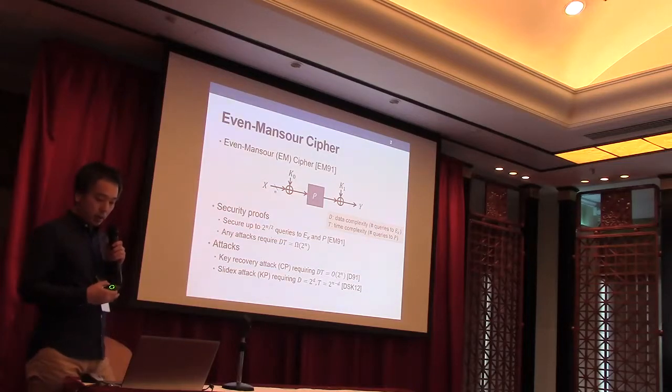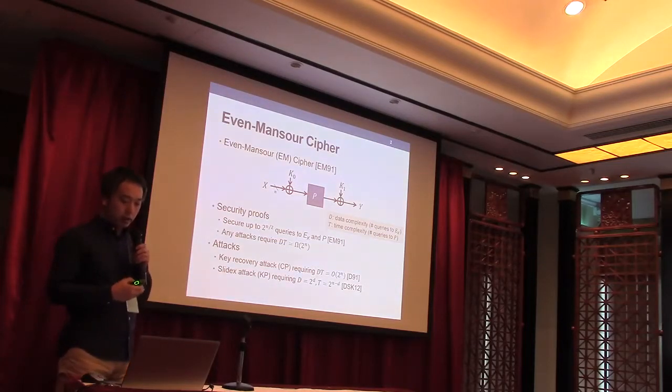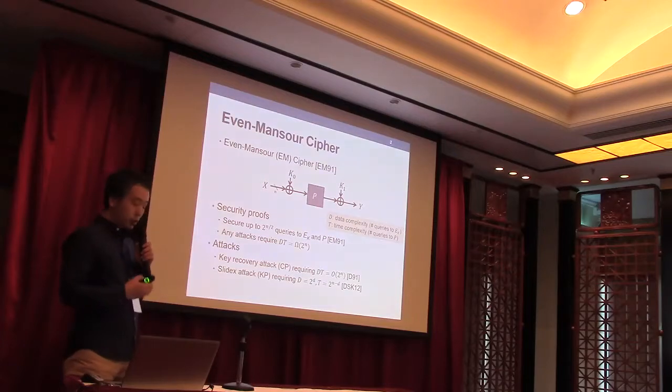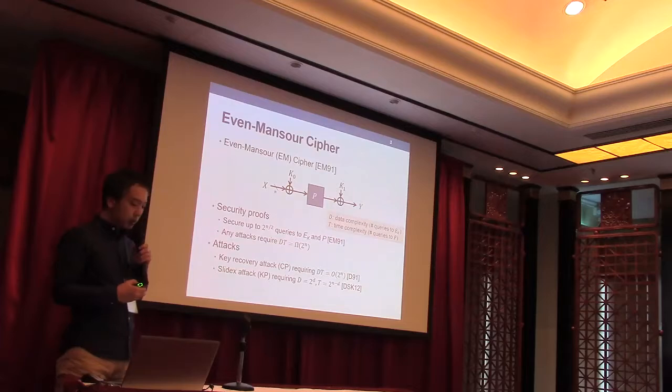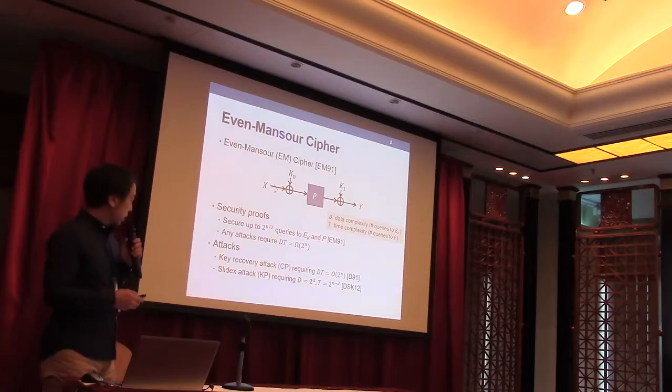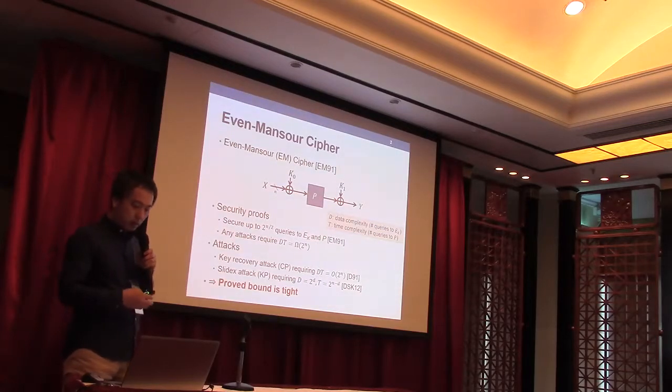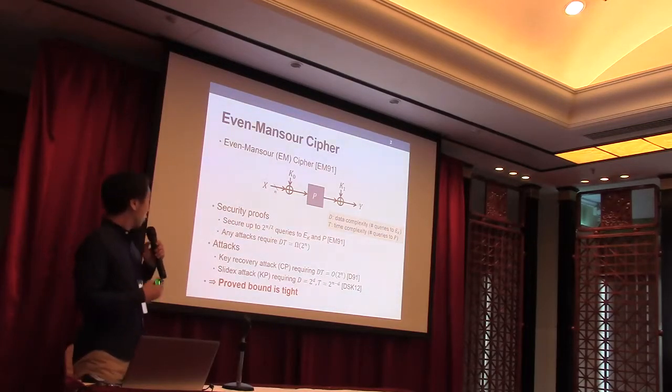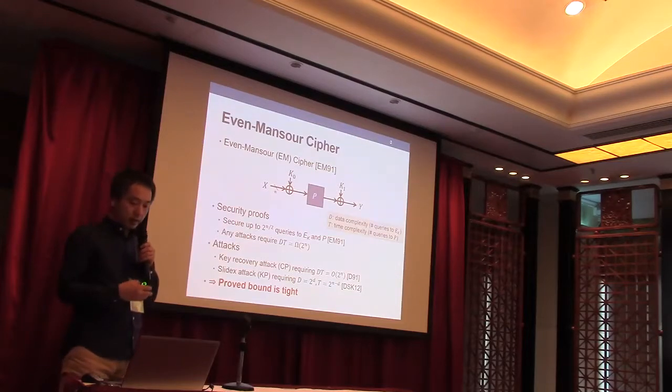Then Guo et al. showed a non-chosen plaintext attack which requires 2D non-chosen plaintext and 2 to the n minus D time. So those results imply that the proved bounds on the one-round Even-Mansour Cipher are actually tight.